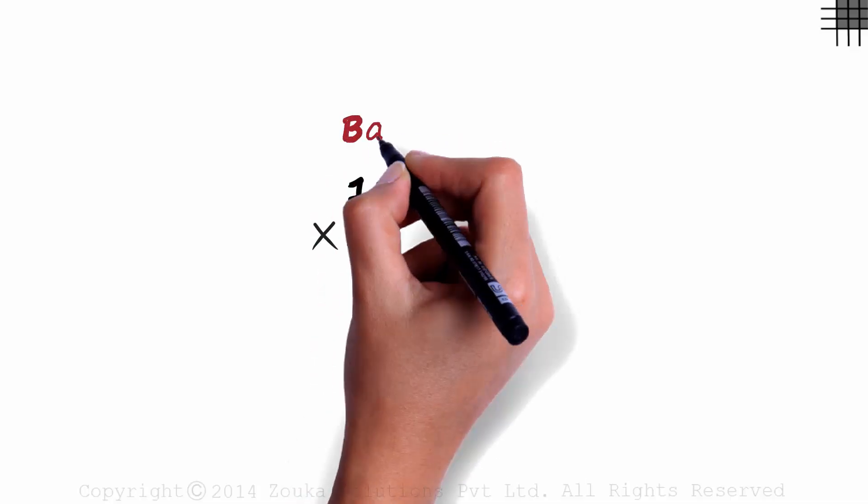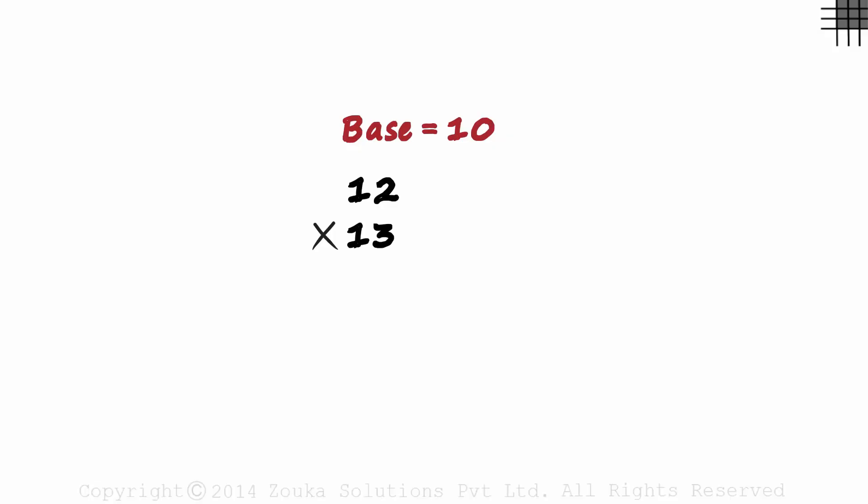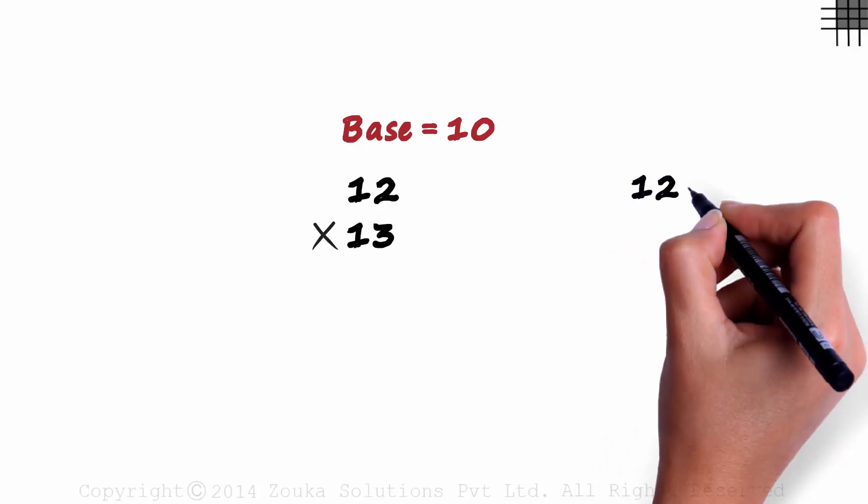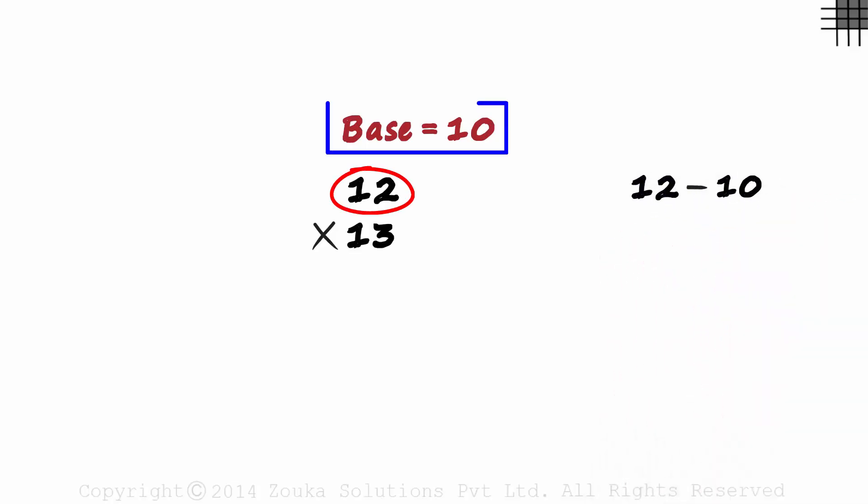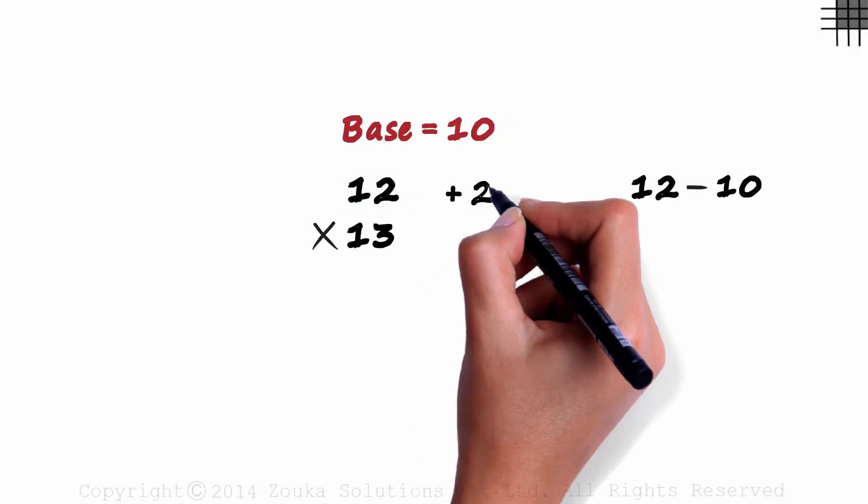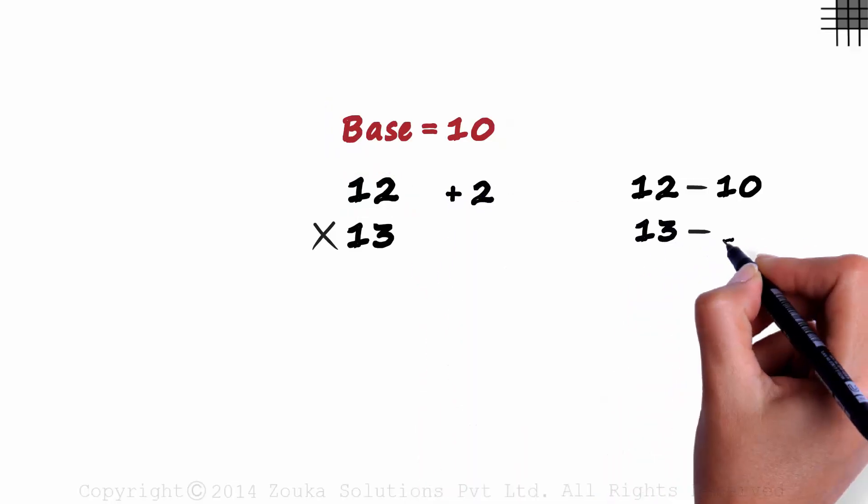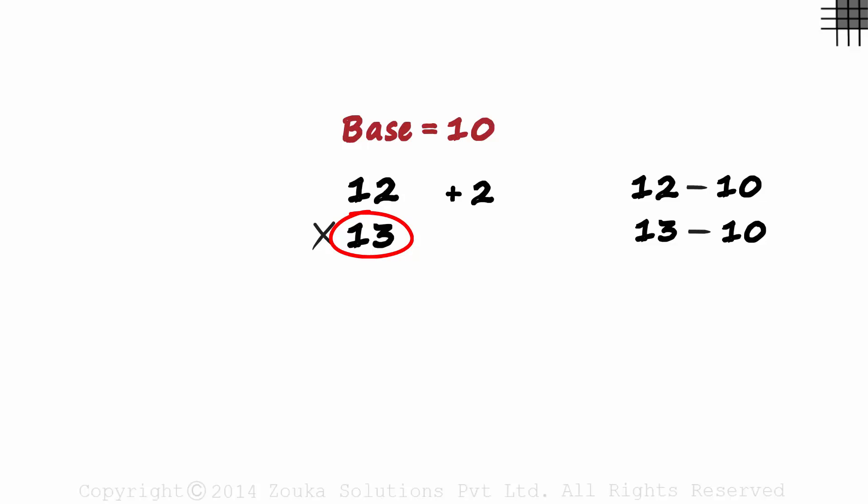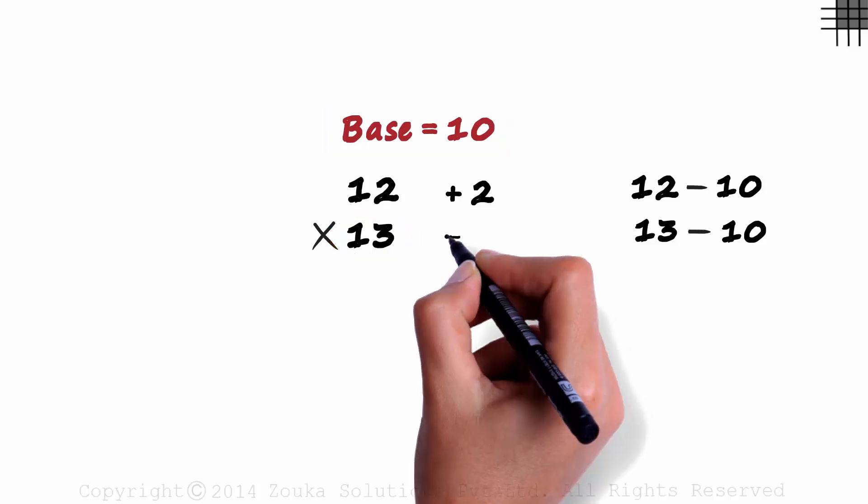Let's say we have to multiply 12 with 13. As both the numbers are close to 10, let's consider 10 as the base. Once we find the base, we need to find the deviations of the numbers from the base. 12 minus 10 will give us the deviation of this number from the base. That will be 2. And 13 minus 10 will give us the deviation of this number from the base. 3.